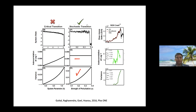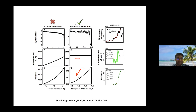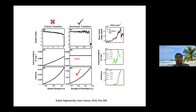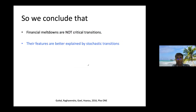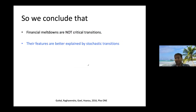This was found not just for one market but across a whole range — Dow Jones, S&P, Nasdaq, and others — for crashes in 1929, 1987, 2000, and 2008. The autocorrelation at lag one consistently does not show expected trends, but variance always shows expected trends. However, there were also many false positives when relying only on variance, so it's only a signal indicator, not a predictive tool. We conclude that financial markets are not well described as critical transitions near bifurcation points — their features are better explained by stochastic transitions.